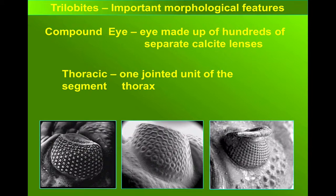The thoracic segments are the jointed units of the thorax. Different numbers of thoracic segments characterise different species of trilobites.